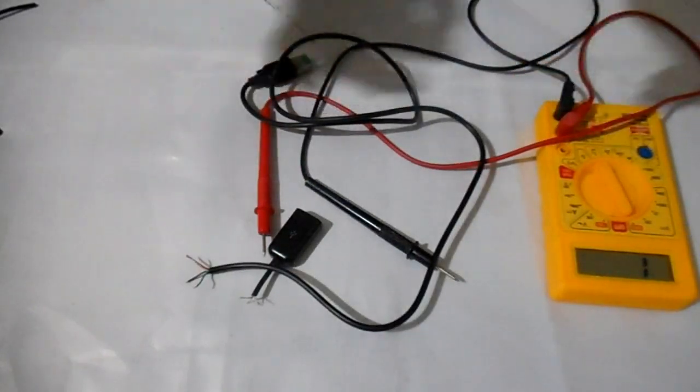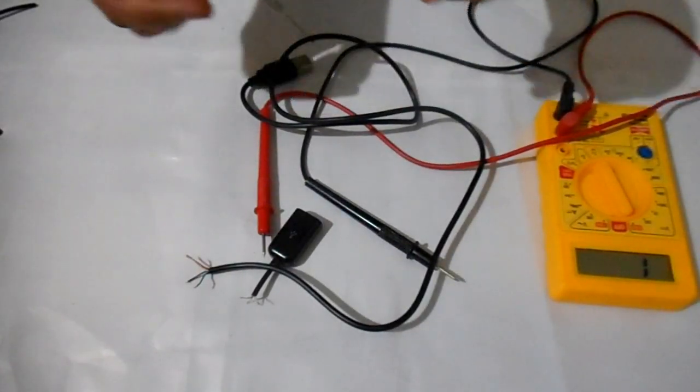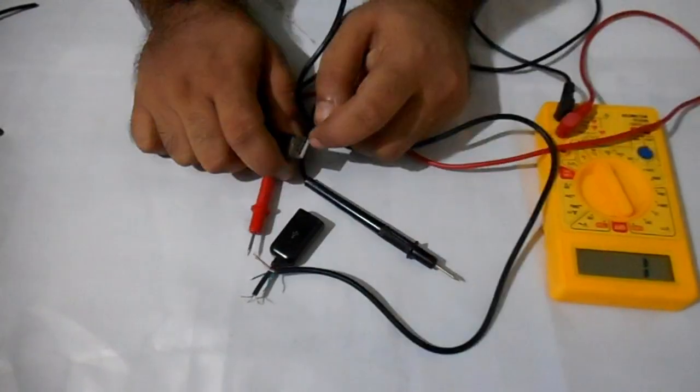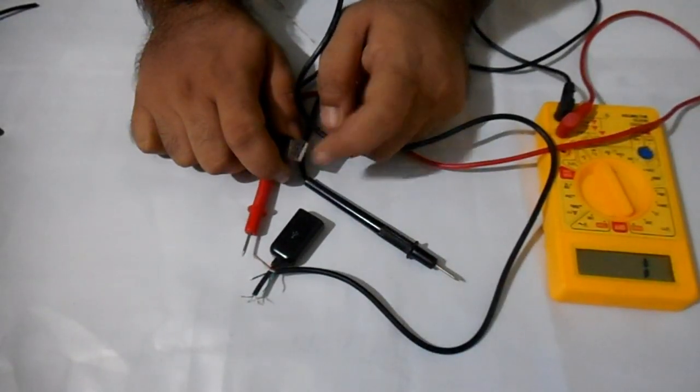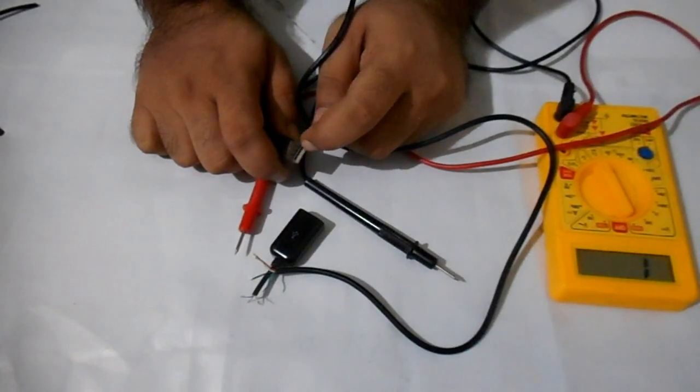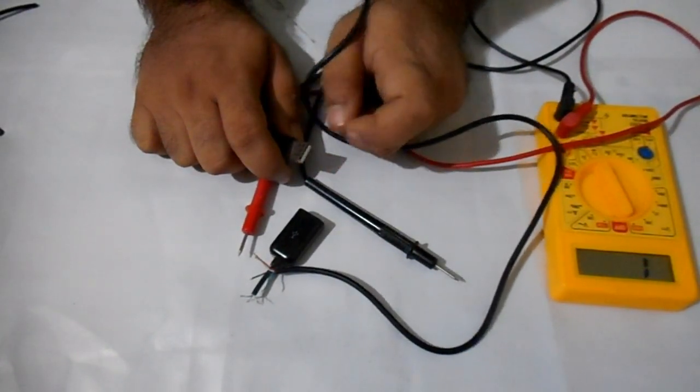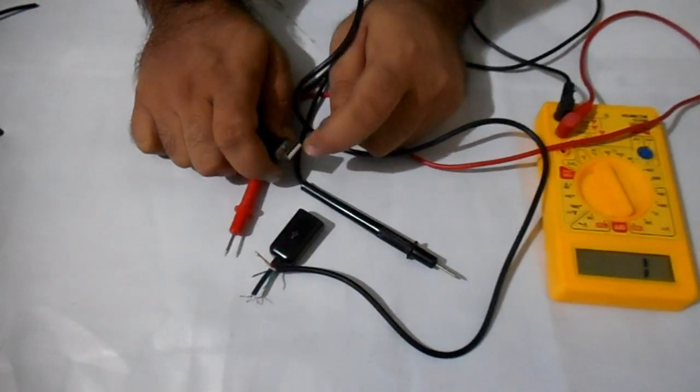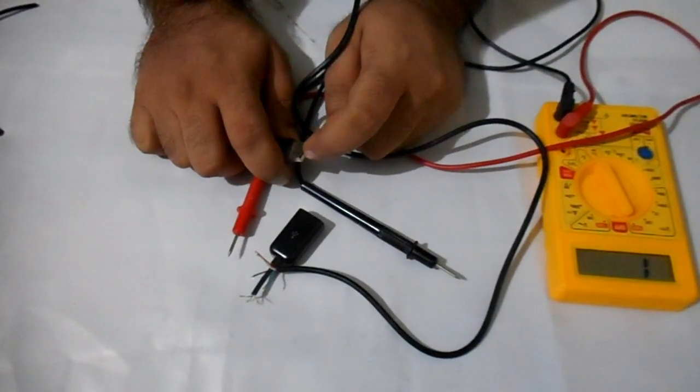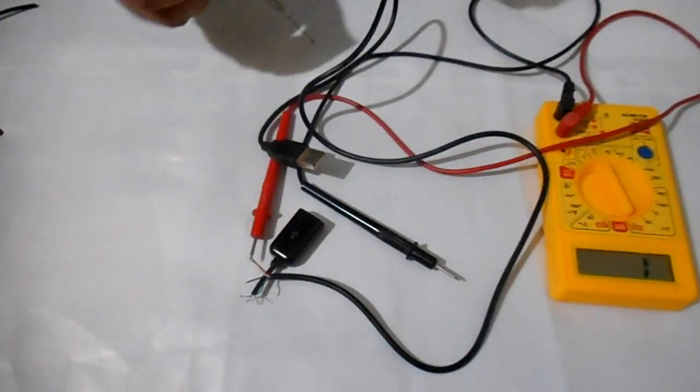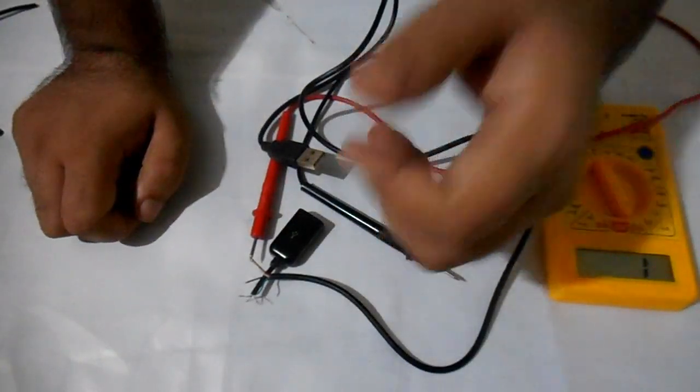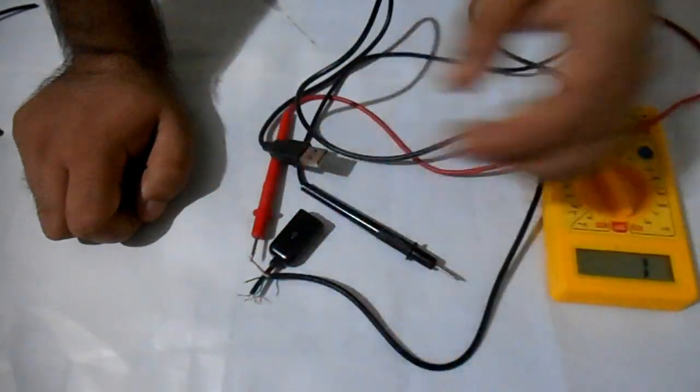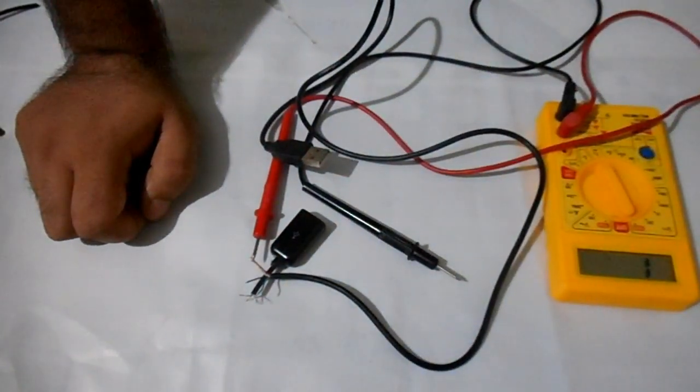That was the complete description about the testing of USB cable. How USB cable charges the telephone? By using first and last contacts. That is, plus five volt and ground. It charges the telephone. And when you are transferring the data, it uses middle two contacts. So, that's how USB works. I hope you like this video. Give us a thumbs up. And don't forget to subscribe. Thanks for watching. Have a good rest of your day.